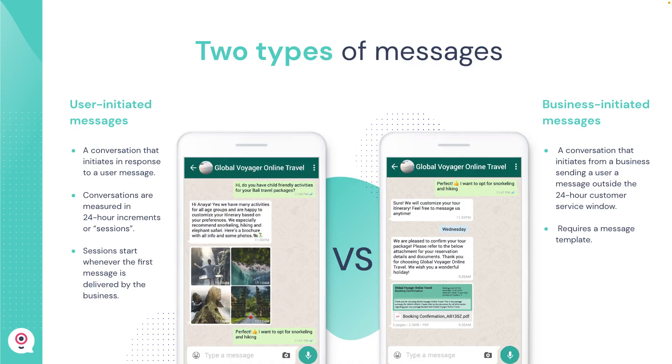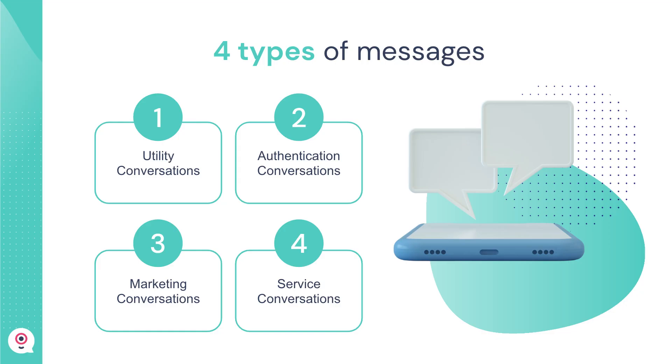Let's begin with the new pricing for the WhatsApp Business API. As you may know, WhatsApp Business API pricing was based on two conversation categories: user-initiated and business-initiated conversations. Meta is now updating and expanding those categories into four new categories.